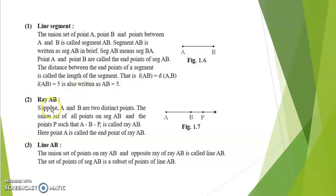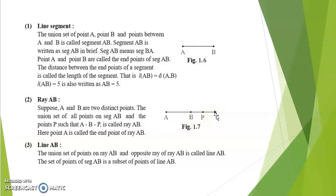Next is ray AB. Suppose A and B are two distinct points. The union set of all points on segment AB and the points such that A-B-B' is called ray AB. Here A is called the end point of ray AB. A ray has an end point on one side and an arrowhead on the other, because it can be extended infinitely in that direction.